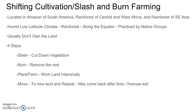There are four steps to shifting cultivation. Just in the name, shifting means move, and slash and burn tells us what's involved. First, they slash — they cut down the vegetation — because you can't farm in thick rainforest; you have to clear it. Then they burn to remove the rest of the vegetation. Then they plant and farm that land intensively, which tends to lead to soil erosion and nutrient depletion until they can no longer plant there. So they move to new land and repeat.